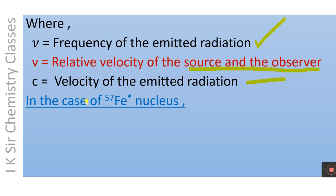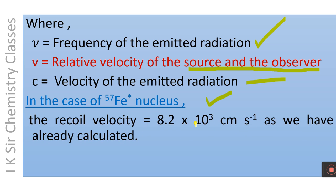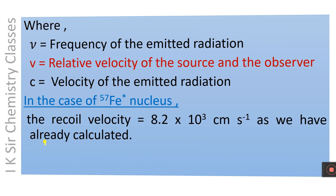In the case of the Fe-57 nucleus, the recoil velocity is equal to 8.2×10³ cm/s, as we have already calculated in the previous slide.